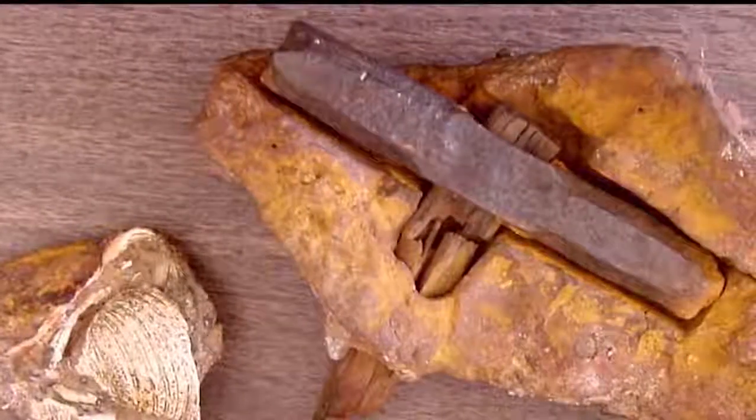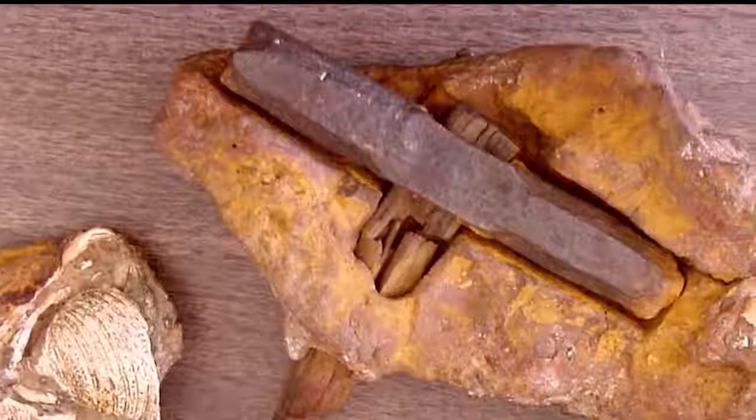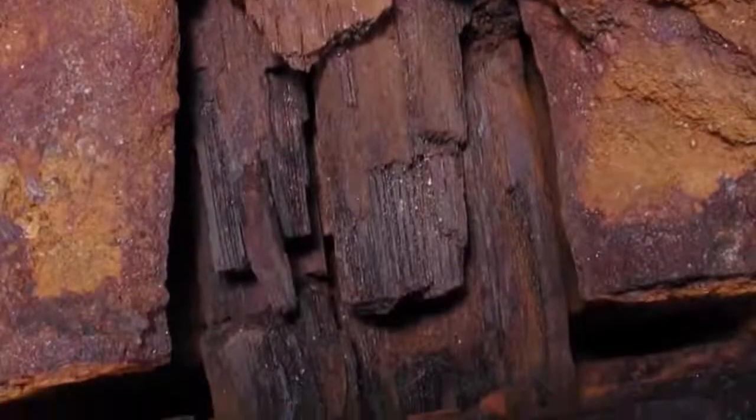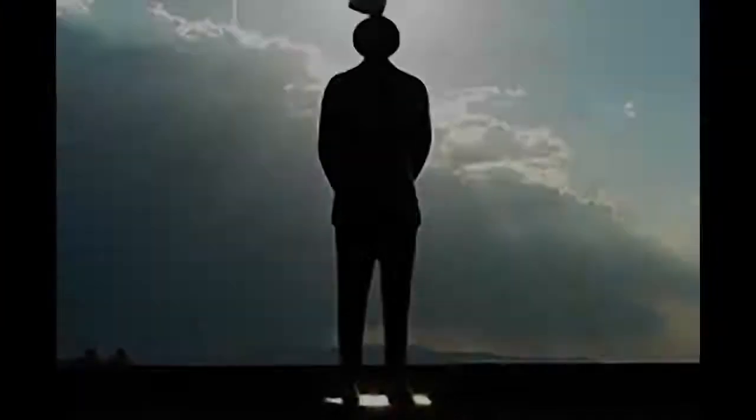However, the real kicker is that the iron itself is said to be 500 million years old. It's so old that a portion of the handle has even started transforming into coal. Nobody can explain how this happened.